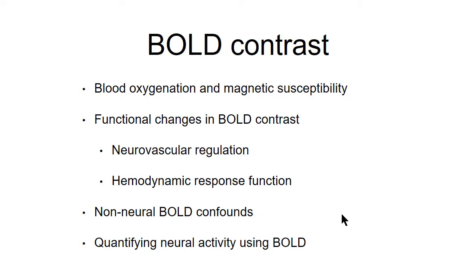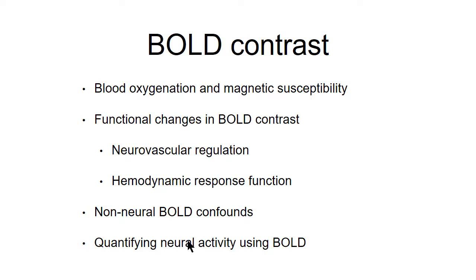As an overview: I'll introduce blood oxygenation and how it influences susceptibility. Most importantly for functional imaging, how changes in the BOLD signal manifest via neurovascular regulation, and how we can model this through the hemodynamic response function. There are also many non-neuronal things that can contribute to the BOLD signal — confounds that need to be understood, mediated, or removed in post-processing. Finally, if we want to make BOLD fMRI useful in patient cohorts, how can we make it more quantitative and precise at measuring one parameter?